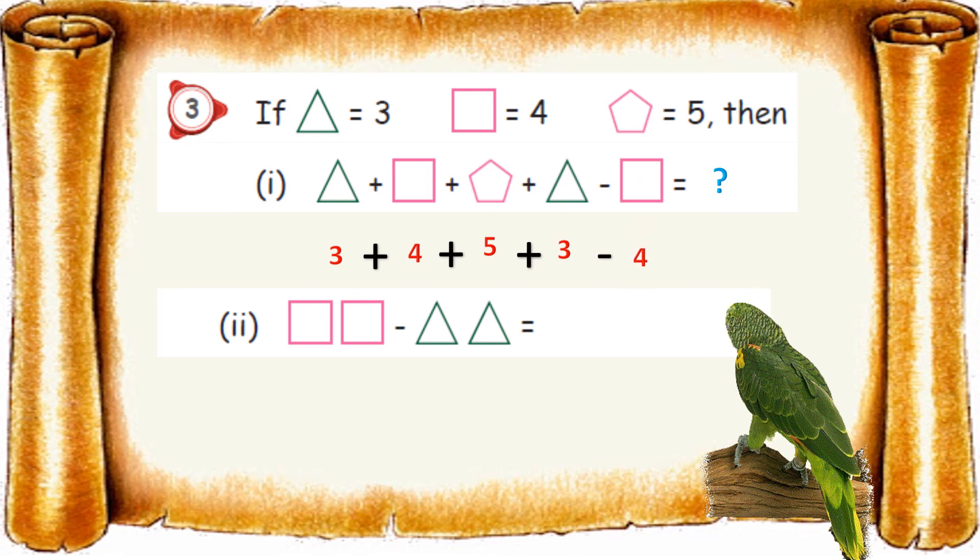Just add with the plus symbols and then we need to subtract 4. 3 plus 4 equal to 7. 7 plus 5 equal to 12. 12 plus 3 equal to 15. So 15 minus 4 equal to 11.